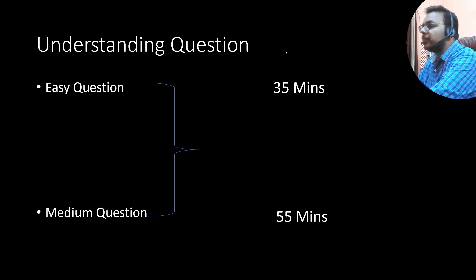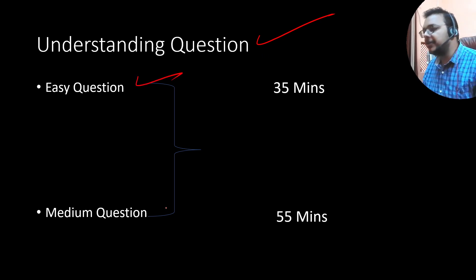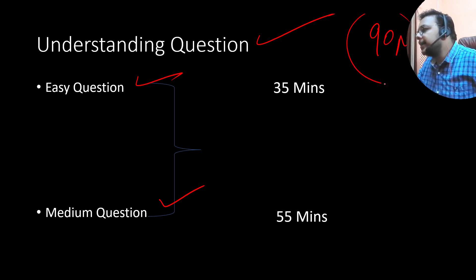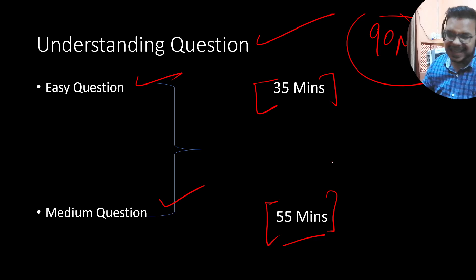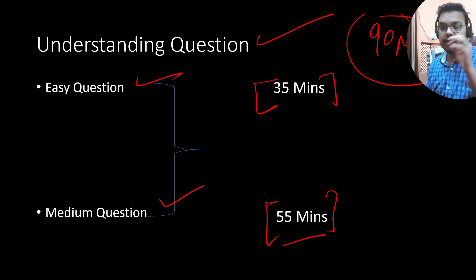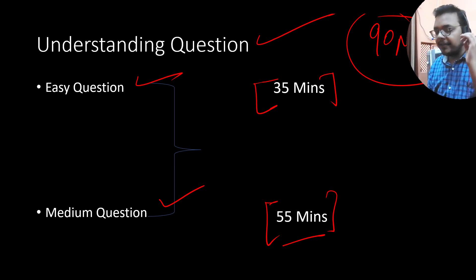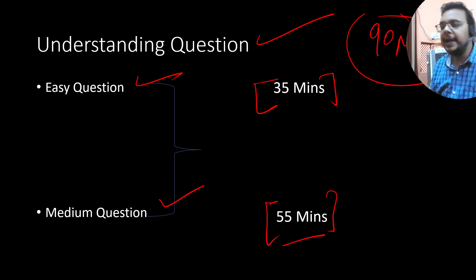There are a total of two questions — one will be easy and one will be medium. The total time will be around 90 minutes: 35 minutes for the easy one and around 55 minutes for the medium one. Don't worry about the time limit because the coding question level will be easy overall. Even if you are an average coder without much preparation, that is fine. TCS does not ask very difficult questions, though last year there were some exceptions with standard questions.